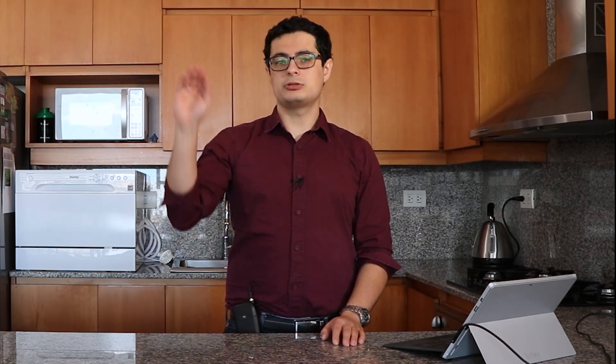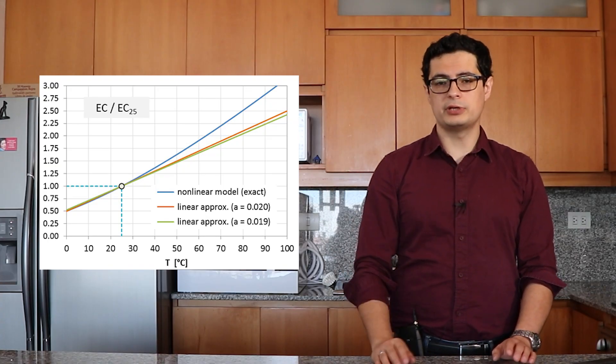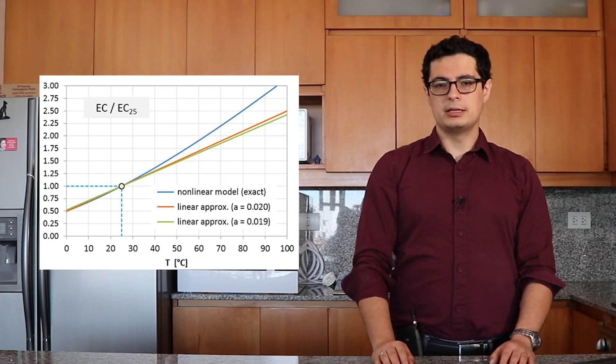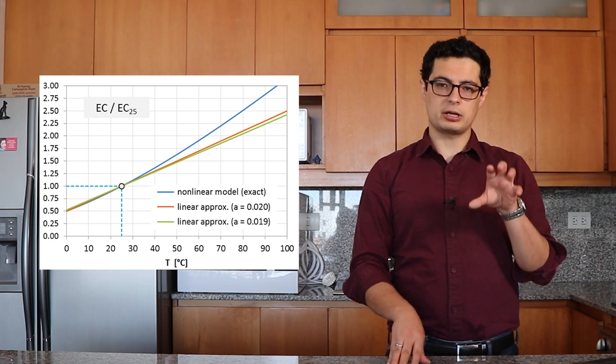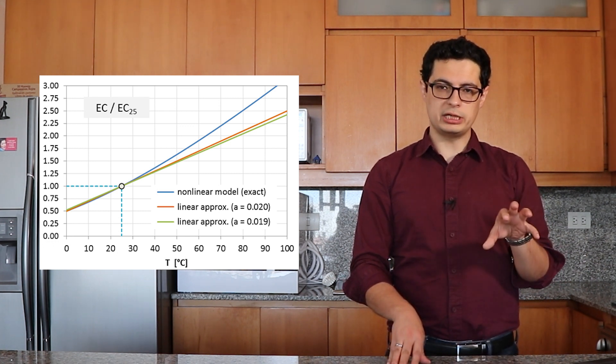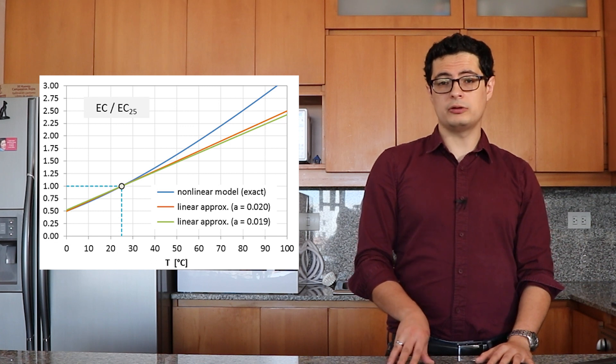This means that viscosity doesn't change in a simple linear stepwise fashion from a low temperature to a high temperature, but it actually grows faster, almost exponentially, as a function of temperature. This means that to compensate conductivity readings against temperature we need to use non-linear functions.